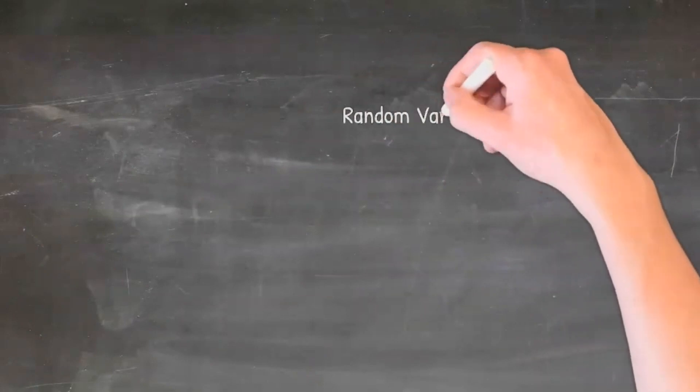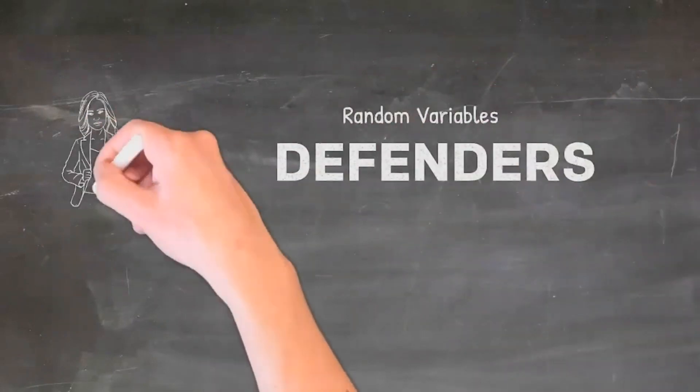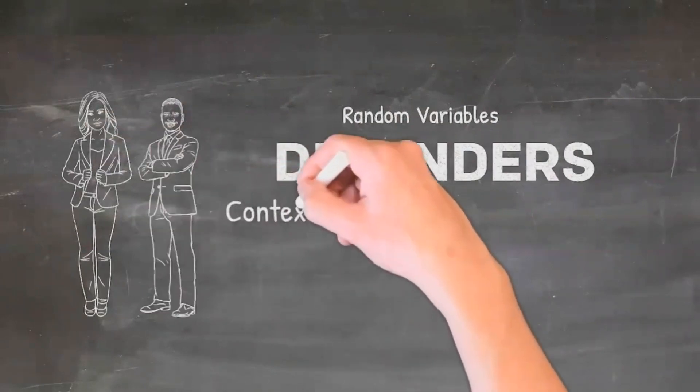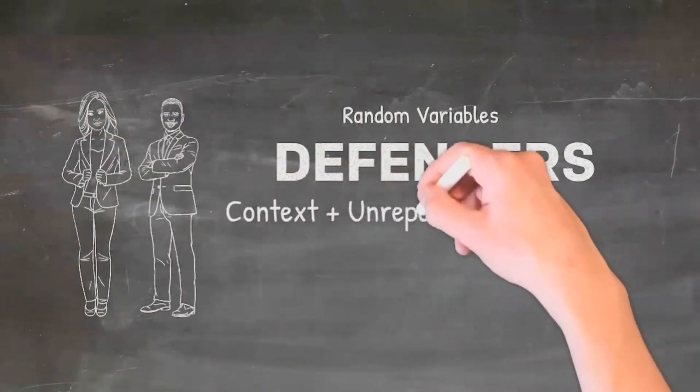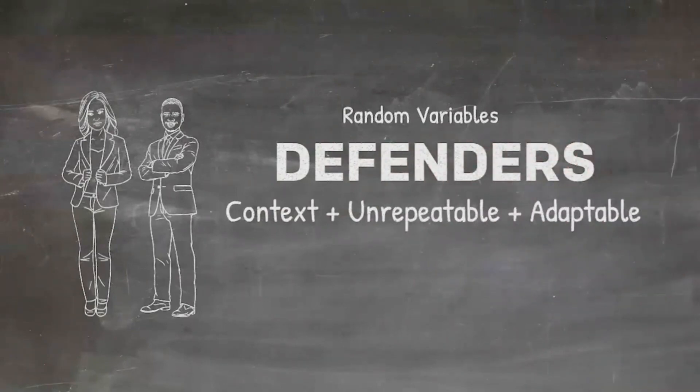Defenders on the other hand deal with random variables because they understand that the variables in violence are unrepeatable, therefore they employ context within their training and they utilize adaptable principles.